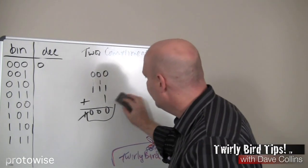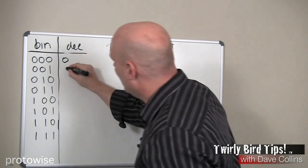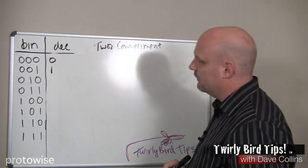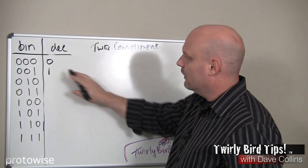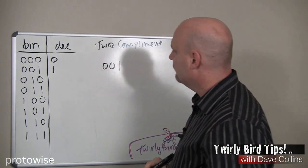Let's see how it deals with the actual other values. Let's look at 1. To get the negative of 1, the binary representation of negative 1, we would follow the rule. Here's our original value, 0, 0, 1.